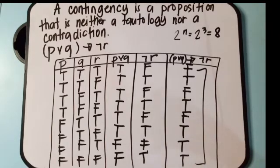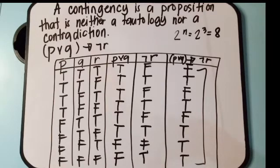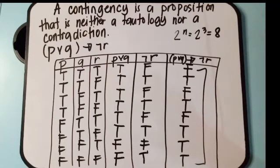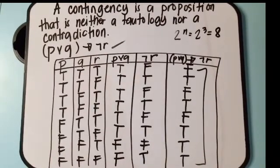The answer is a combination of false and true — therefore this is a contingency. It can't be all false, because that's a contradiction, and it can't be all true, because that's a tautology. Even if just one value is different, it is called a contingency. So this proposition is a contingency.